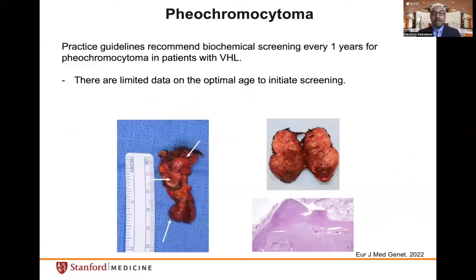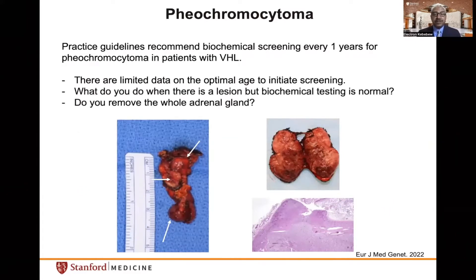Most practice guidelines recommend biochemical screening every one year for pheochromocytoma in patients with VHL. However, there is limited data on the optimal age to initiate screening. Two areas to cover are: what to do when there is a lesion in the adrenal gland but biochemical testing is normal, and whether to remove the whole adrenal gland or perform cortical sparing or partial adrenalectomy. Patients with VHL-associated pheochromocytoma could have multiple nodules or tumors in the adrenal gland.